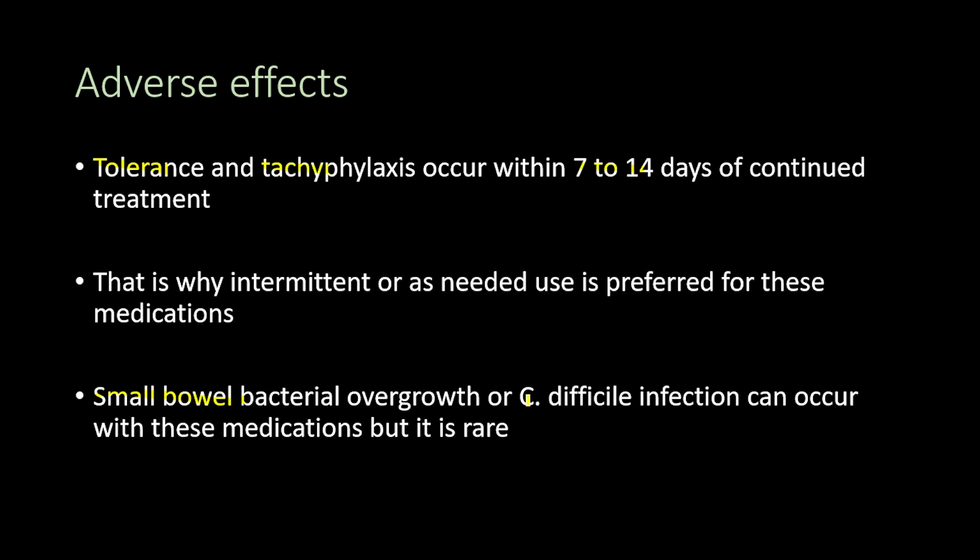Small bowel bacterial overgrowth or Clostridioides difficile infection can occur with H2 blockers, but it is rare. In comparison, proton pump inhibitors cause much more small bowel bacterial overgrowth or C. difficile infection because PPIs have greater efficacy in reducing gastric acid secretion — and since gastric acid has antibacterial properties, reducing it more leads to greater bacterial overgrowth.